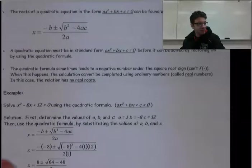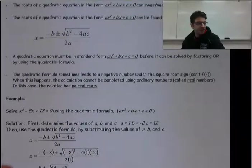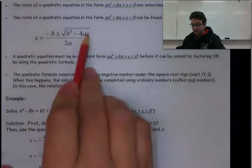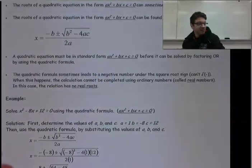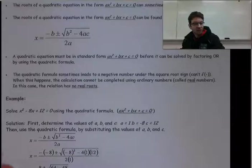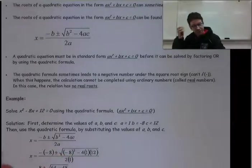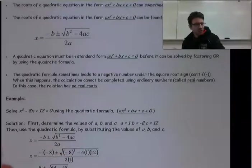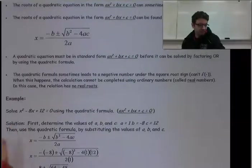Sometimes when you solve this, you will get a negative number under the square root. That simply means there are no real roots, because you can have a quadratic function which does not cross the x-axis. We'll look at more examples about negatives under the square root in tomorrow's lesson.